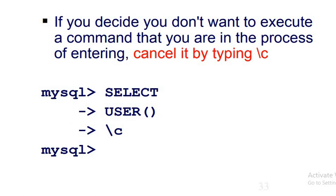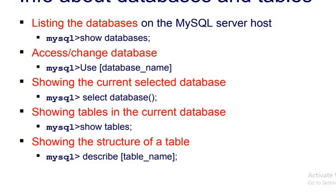If you want to cancel any particular command once it is in progress, you can simply give slash C. The SHOW DATABASE, USE database, SELECT database, SHOW TABLES, DESCRIBE—these are already given in the previous sessions. Showing the structure of any particular table: DESCRIBE followed by table name. Don't use brackets.